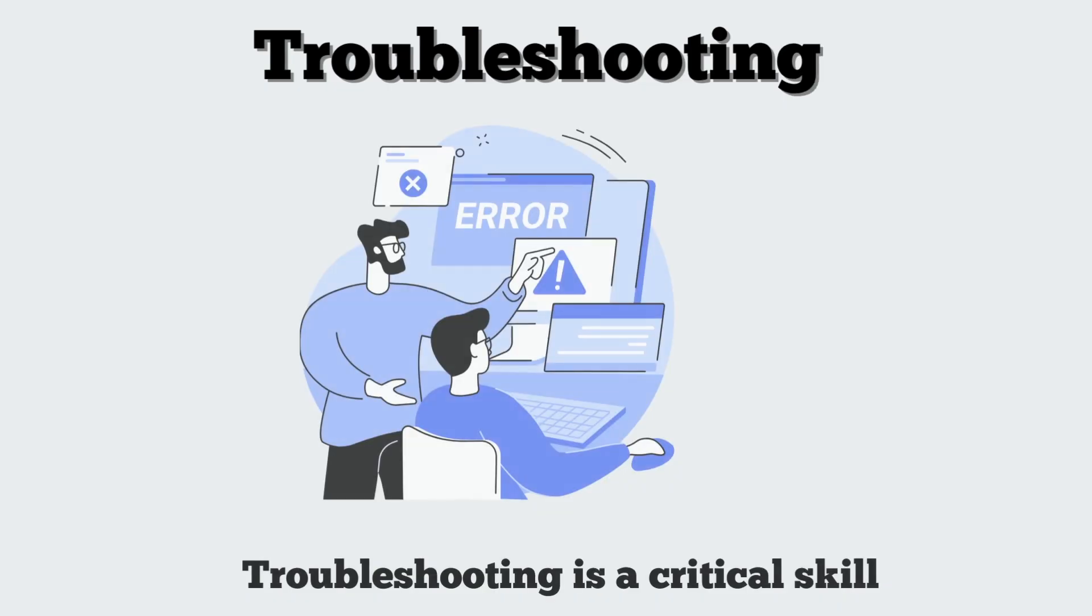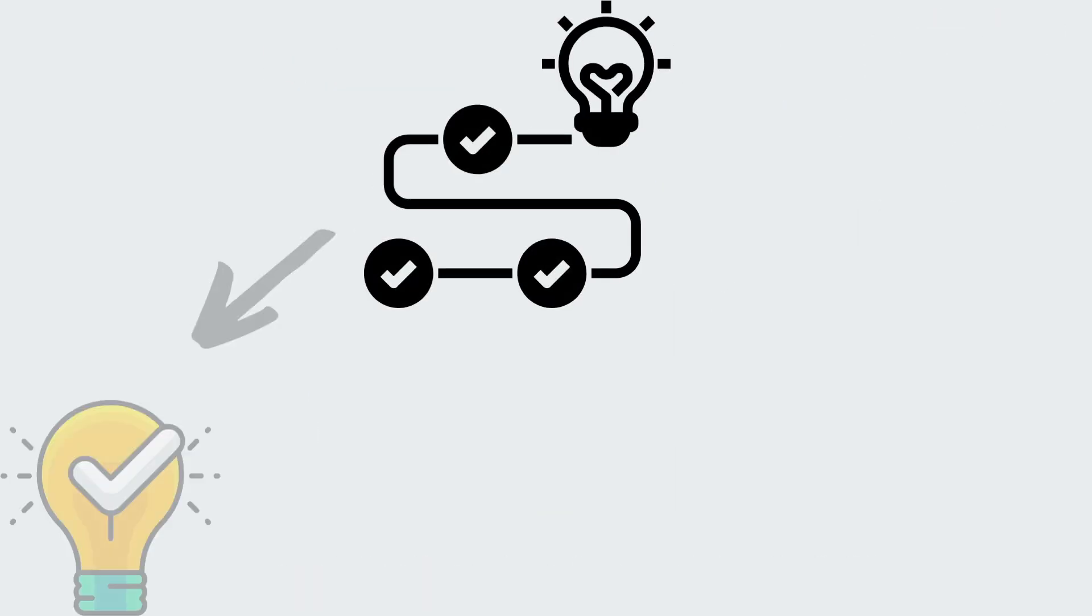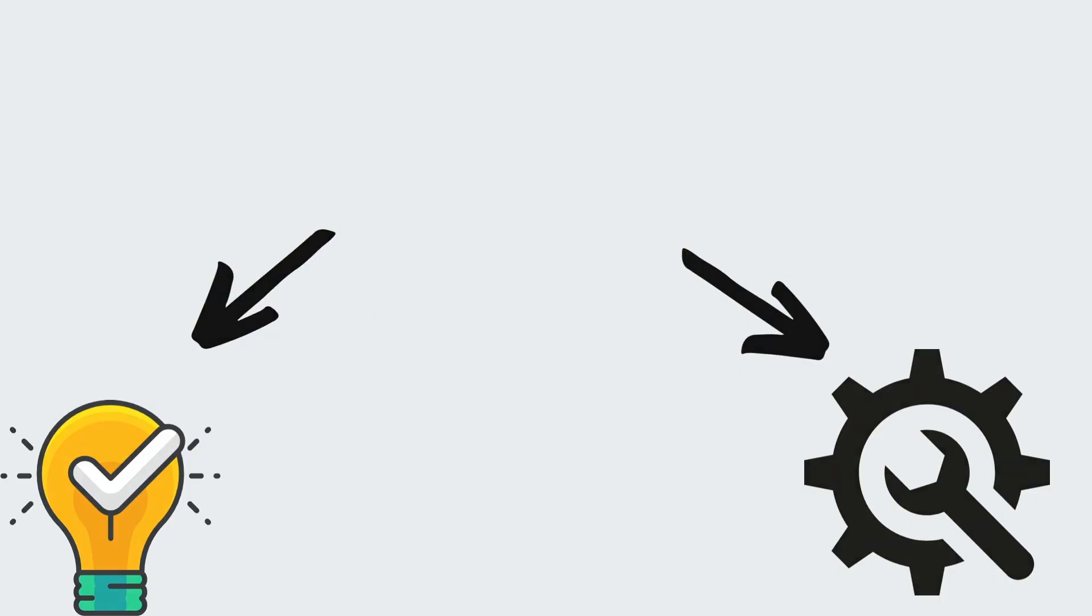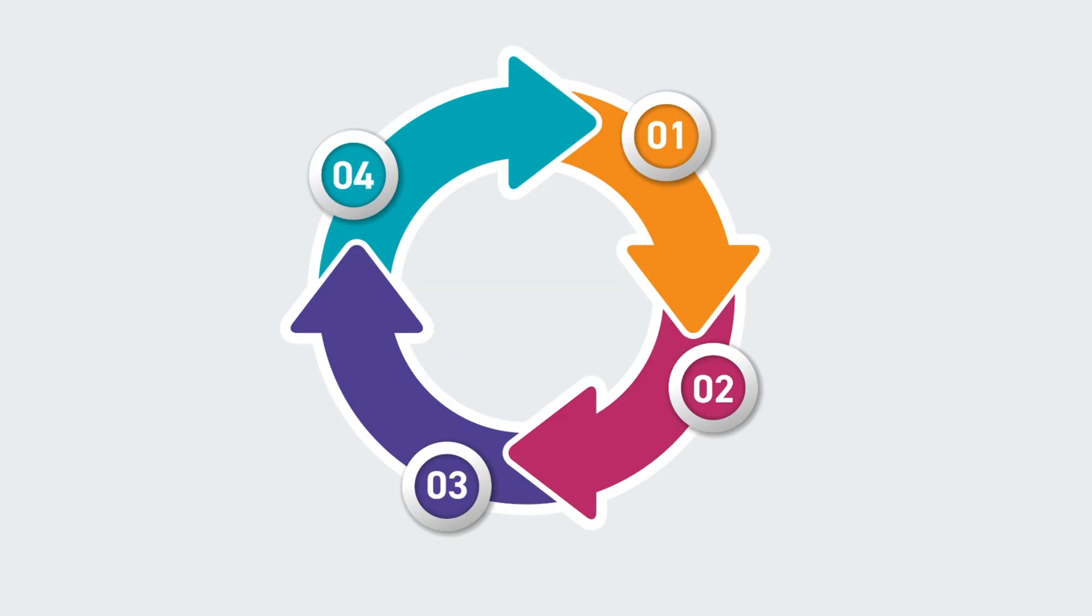Troubleshooting experimental workflows is a critical skill. It involves a systematic approach to diagnosing and rectifying errors. Step-by-step diagnostic methods are essential where each phase of the experiment is carefully analyzed to identify potential error sources.